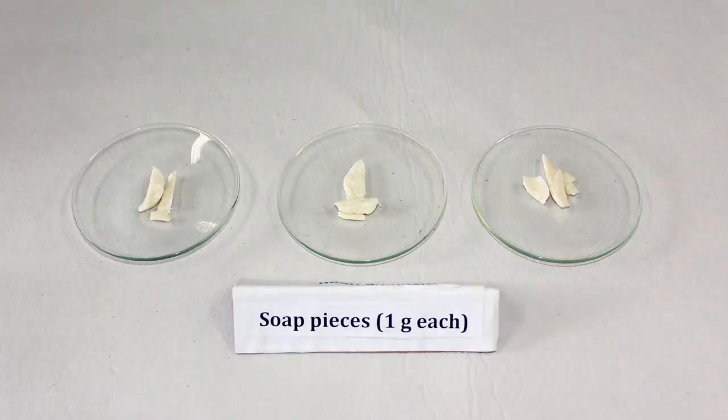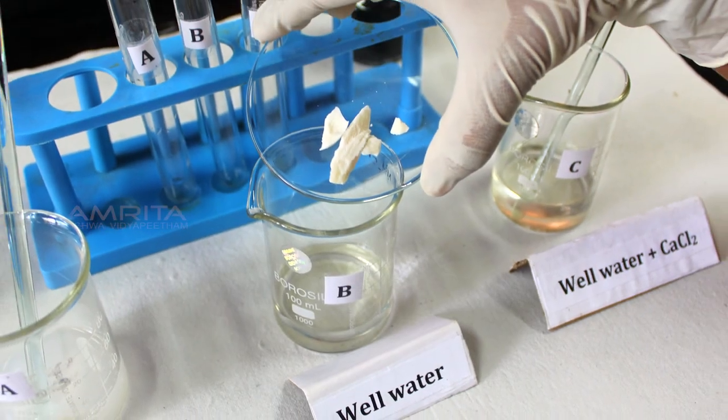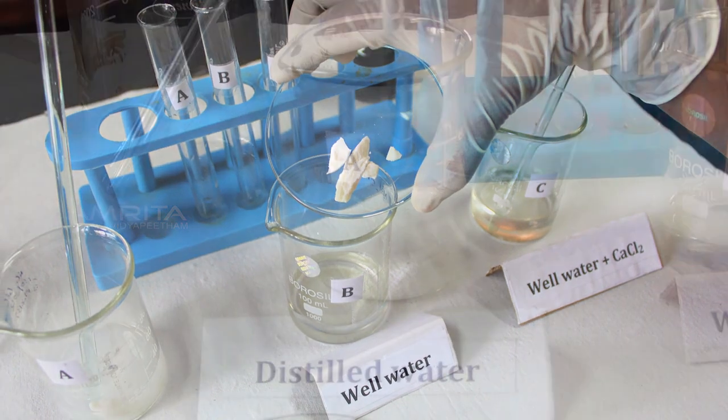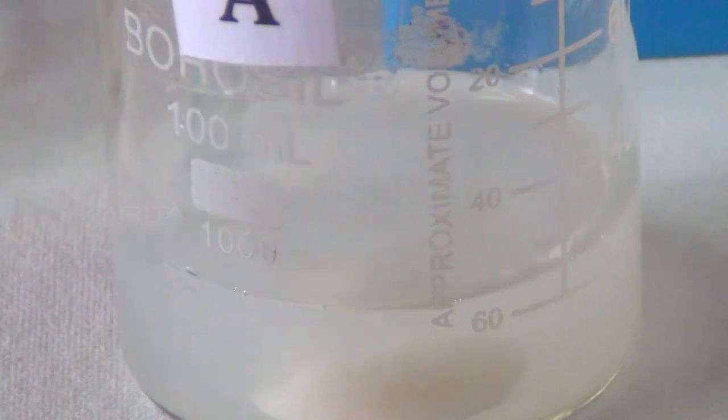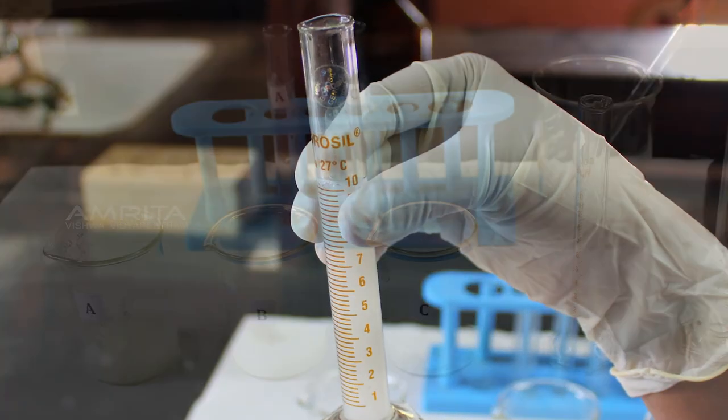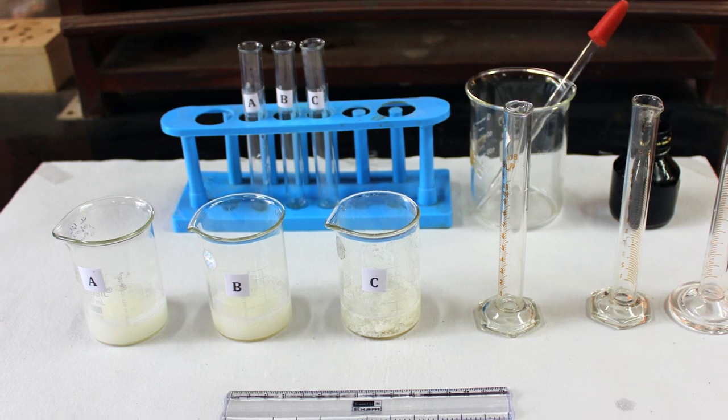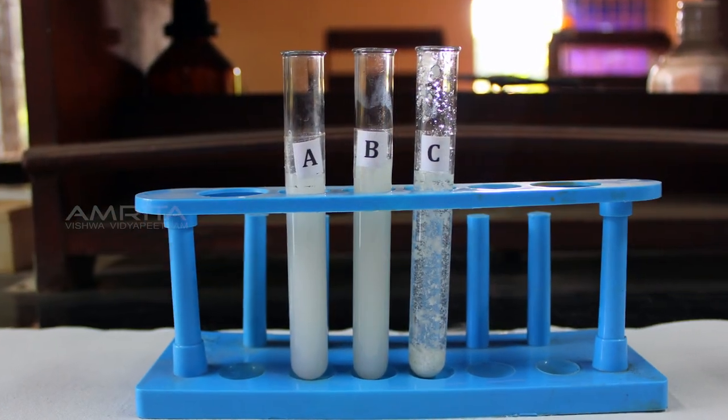Precautions: Use the same sample and the same weight of soap from beakers A, B and C. While stirring the soap solution, do not spill any solution from the beaker. Carefully measure the same quantity of soap solution from beakers A, B and C to put it into the experimental test tubes A, B and C.